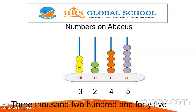In the 1's place we have 5 beads, and in the 10's place we have 4 beads. In the 100's place we have 2 beads, and in the 1000's place we have 3 beads. So the number is 3245. The number name is three thousand two hundred and forty-five.